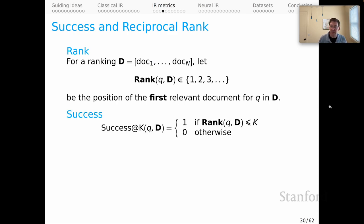And on that basis, we can define success at k. We pick some value k, and then we say for our query and our ranking, the value for success at k is 1 if the rank for the query in our ranking is less than or equal to k, otherwise 0. So a binary judgment.